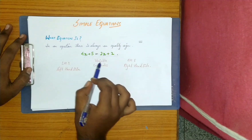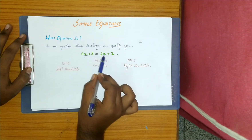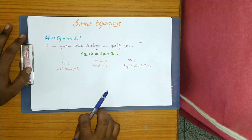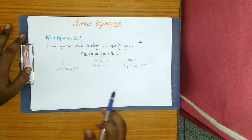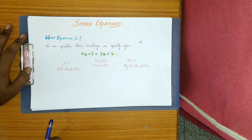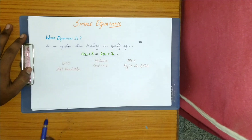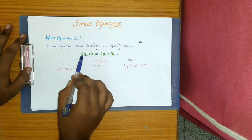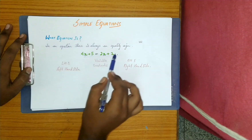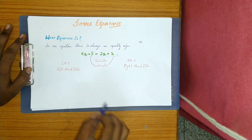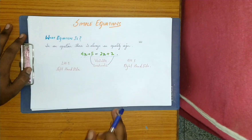The solution of the equation will be the numerical value of this variable. Now, what are constants? Constants means just numbers — you can see 5 and 2 are constants. What about 4 and 2 sitting beside the x values? Those are not constants.